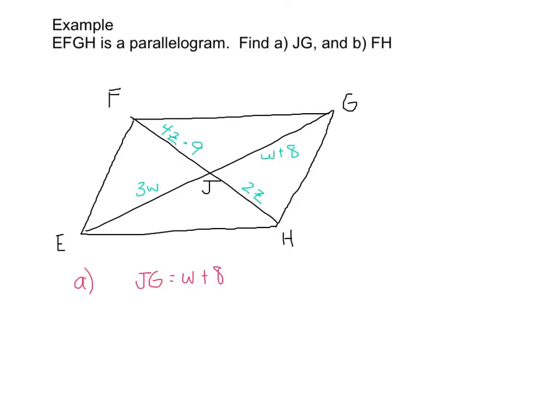Notice, EG is a diagonal. So is FH. In fact, this diagram looks very similar to our last theorem. What we can say through that theorem is that EJ is congruent to JG. Meaning we now have 3W is equal to W plus eight.